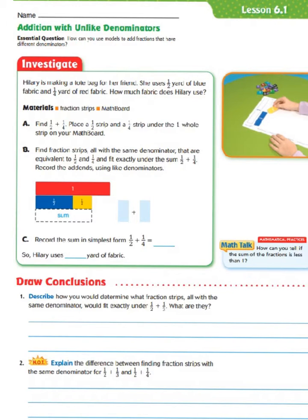We know that we have unlike denominators. Our first denominator is two and our second denominator is four. In order to add fractions together — this is very different from the multiplication and division of fractions we've done in the past — we have to find a common denominator. And in order to find common denominators, we have to look at our multiples.